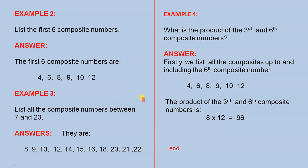Example 3: List all the composite numbers between seven and twenty-three. These are all the composite numbers greater than seven but less than twenty-three, and here they are.